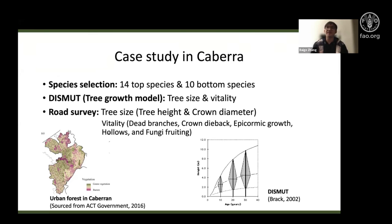Then we compared the measurements with a tree growth model named DISMUT. At the right hand, we can see the diagram. It's an example of the tree growth curve for certain species. But this model was established in the early 2000s, so the climate data in this model was based on that in the 1990s. We assumed in the last 20 years, climate change has affected tree growth in Canberra to some extent.